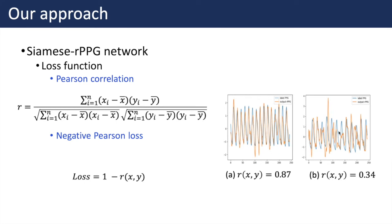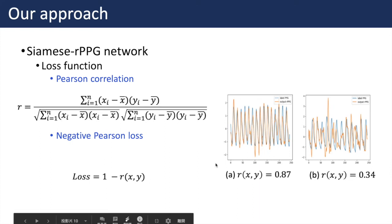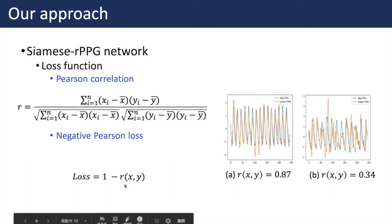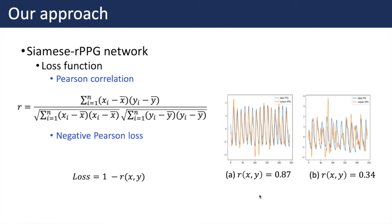On the contrary, the figure on the right shows poorly predicted results where the two signals are hardly related to each other. Therefore, the criterion is to measure the linear correlation through Pearson product-moment correlation, also known as Pearson correlation, formulated as R. We define our loss function as negative Pearson, where x and y are the predicted RPPG and the ground-truth PPG signal, respectively. By minimizing the negative Pearson loss, we train the Siamese RPPG network to estimate RPPG correlated with the ground-truth PPG.